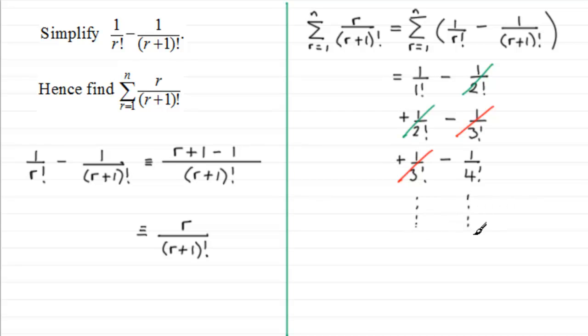That is when r equals n. When r equals n, we're going to be adding 1 over n factorial and then it'll be minus 1 over (n+1) factorial.